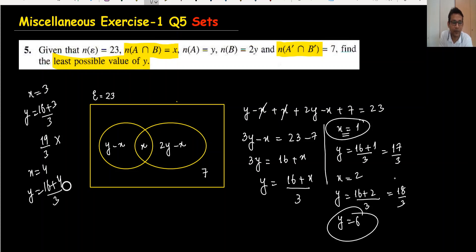When we substitute x = 5, we get (16 + 5)/3 = 21/3 = 7. But 7 is bigger than 6, and we need the smallest value, so this is not the answer.